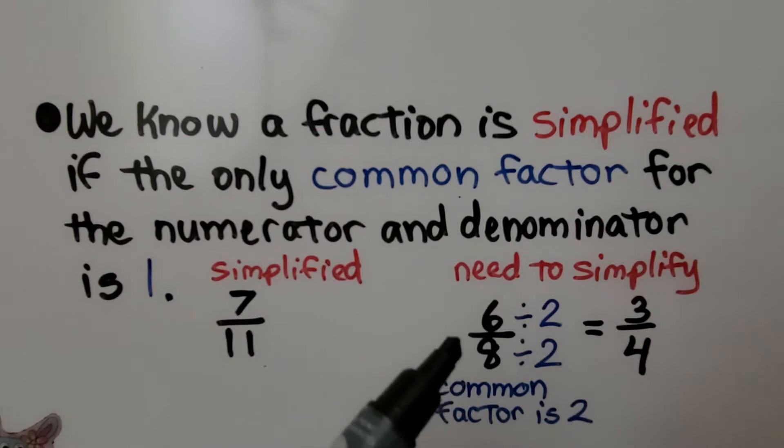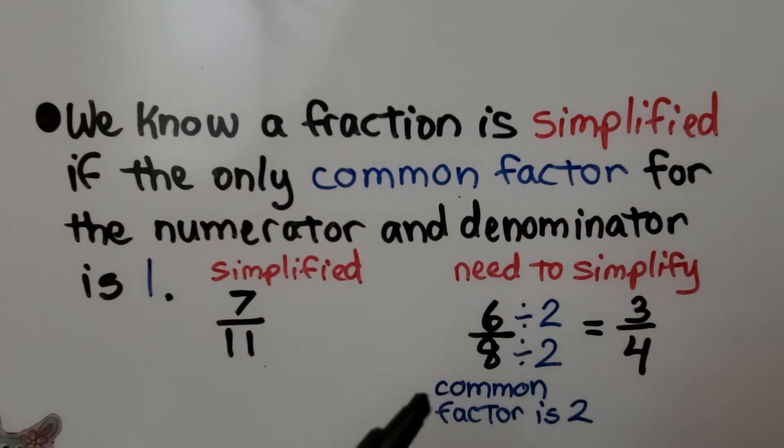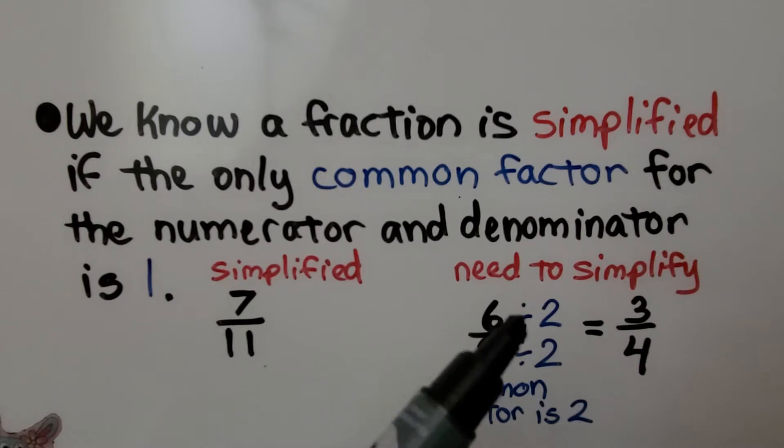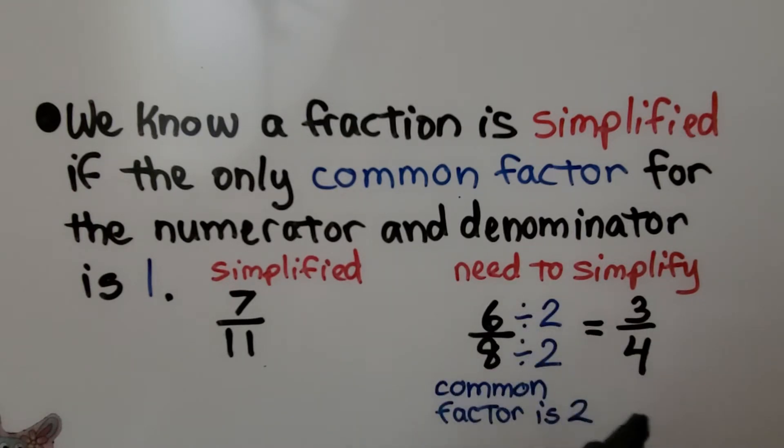For 6/8, this needs to be simplified. They have a common factor of 2. 6 divided by 2 would be 3. 8 divided by 2 would be 4. It simplifies to 3/4.